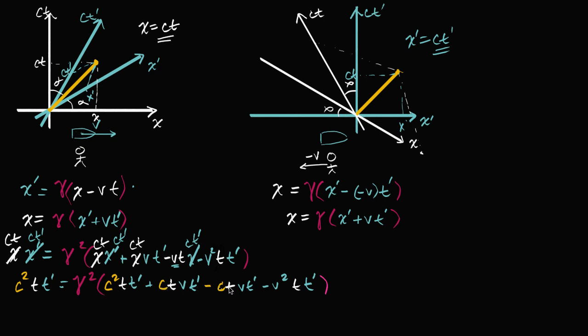And so we're gonna get these two middle terms cancel out. So plus c, t, v, t prime minus c, t, v, t prime. So those are going to cancel out. And then every other term has a t, t prime in it. So let's divide both sides of this equation by t, t prime. And so if we divide the left hand side by t, t prime, we're just gonna be left with c squared. And then our whole thing has simplified quite nicely.